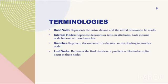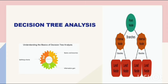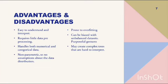These are the terminologies: root node, internal node, branches, and leaf node. A decision tree can be analyzed using splitting criteria, nodes and branches, and information gain.